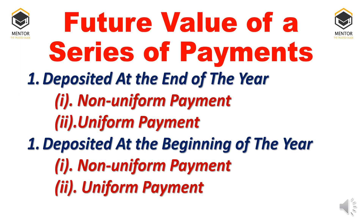When we come to the future value of money for a series of payments, we have two concepts: deposited at the end of the year and deposited at the beginning of the year. In both concepts we have two sub-concepts — non-uniform payments, where different amounts are deposited annually, and uniform payments, where the same amount, say 5000, is deposited every year. In this video I will cover only the first part: deposited at the end of the year. I will make video number three to explain deposited at the beginning of the year.